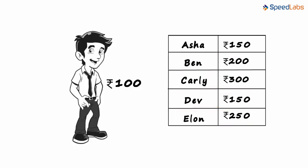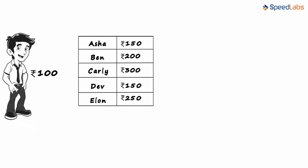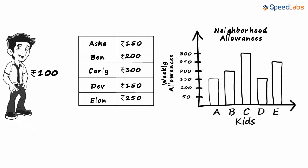Zen's dad says that he is not in the mood to look at so much data. To avoid clutter, Zen uses another technique and shows his dad a graph instead.